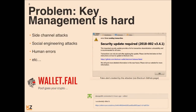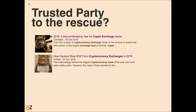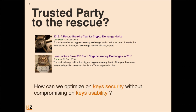What makes key management hard? There are actually many reasons. To name a few: we have side-channel attacks, such as power glitches in hardware wallets as shown in the wallet.fail example. We also have social engineering attacks, such as fabricated messages to users in the Electrum wallet. And we have human errors, as shown in the parity bug example. One solution is to delegate key management to a trusted third party. But this is not an ideal solution — from a security perspective it might be less secure, and it creates centralized elements we try to avoid. So the question remains: how can we optimize security of keys without compromising usability?